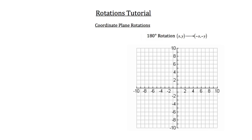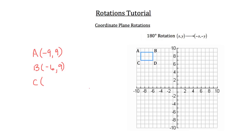I'll go ahead and draw in rectangle ABCD, and we want to rotate that figure 180 degrees. So we'll take the original points. Point A is at the coordinate negative 9, positive 9. Point B is at negative 6, positive 9. Point C is at negative 9, 7. And lastly, point D is at negative 6, 7.